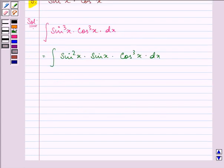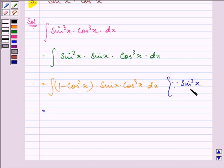Further, now sine square x can be written as 1 minus cos square x. Because sine square theta is equal to 1 minus cos square, sine square x is equal to 1 minus cos square x. So we have further.